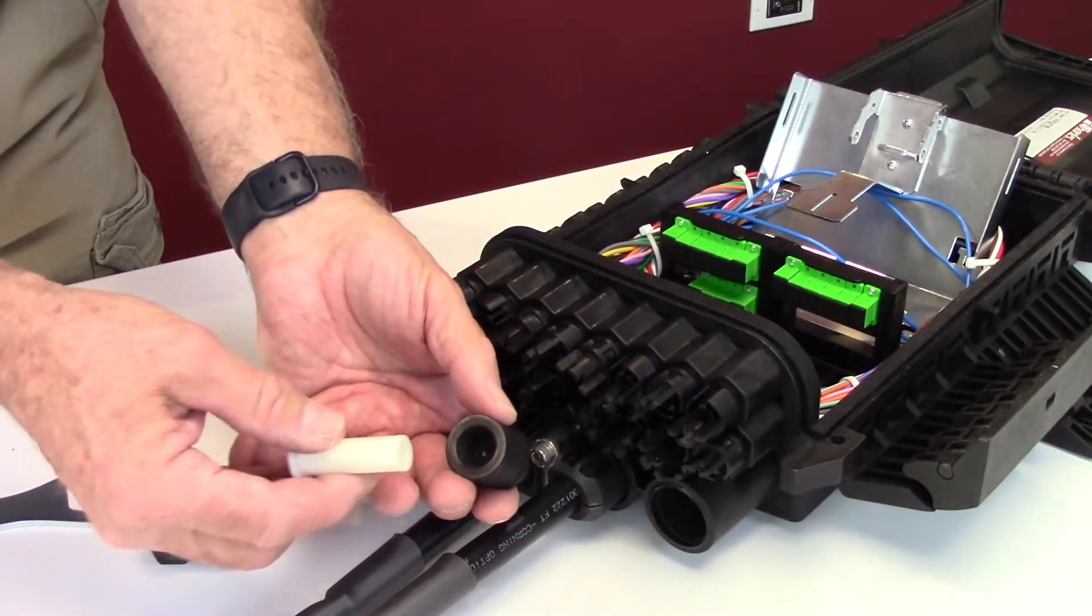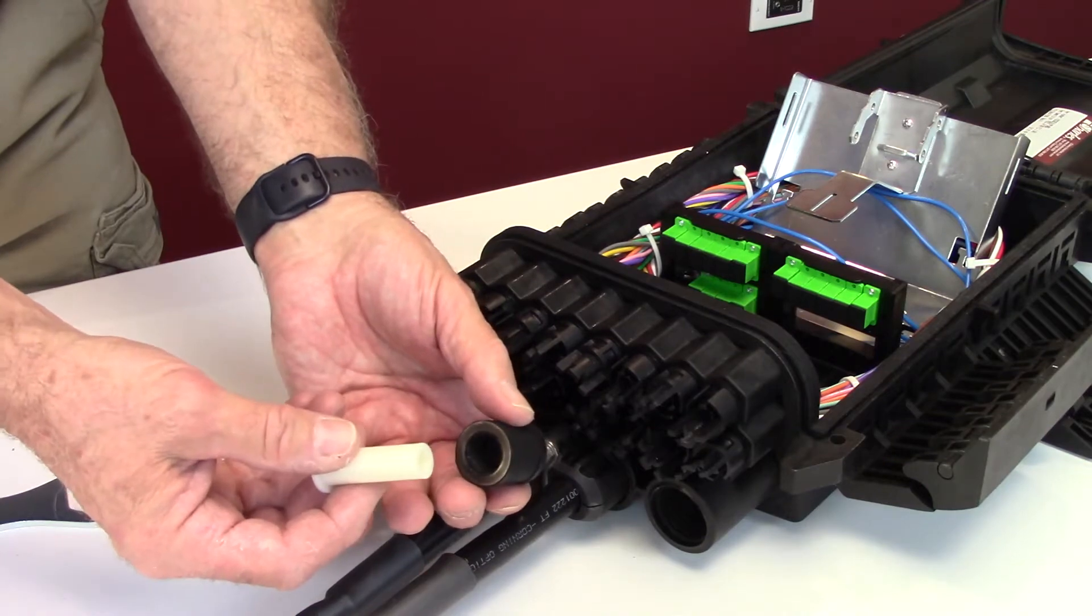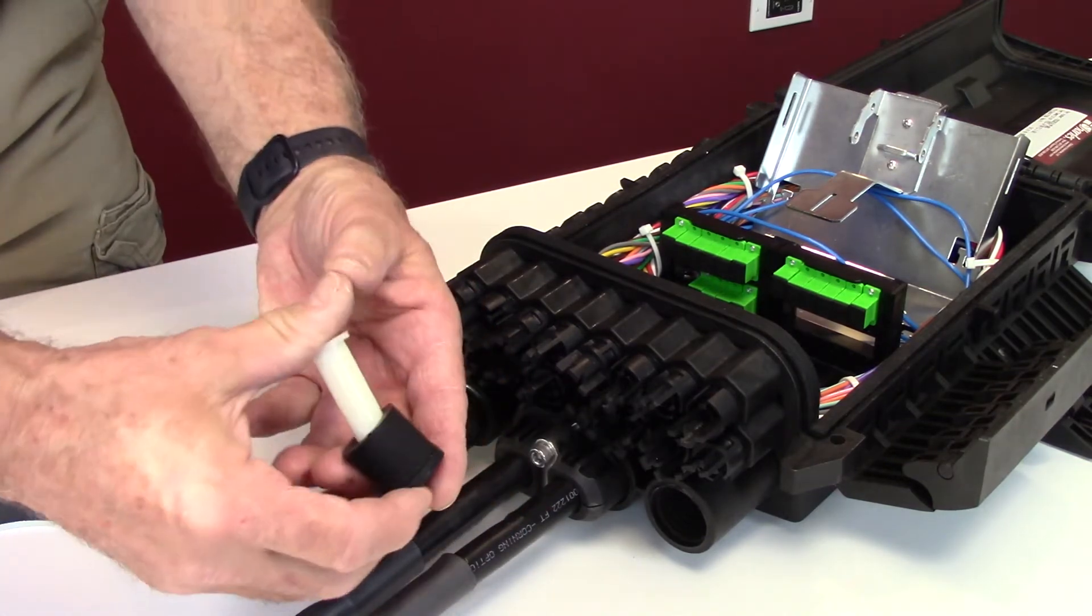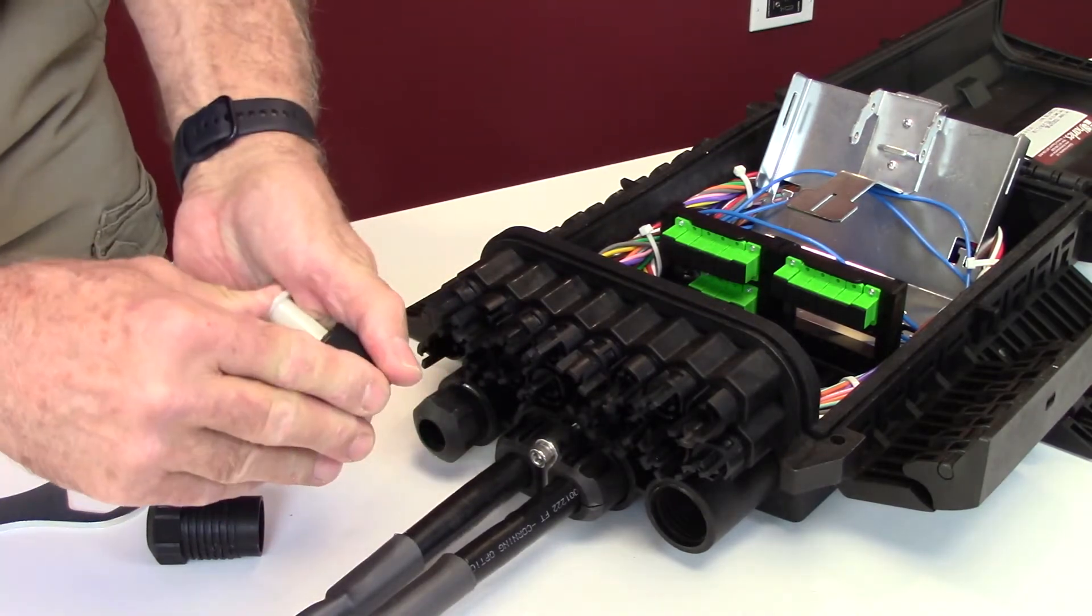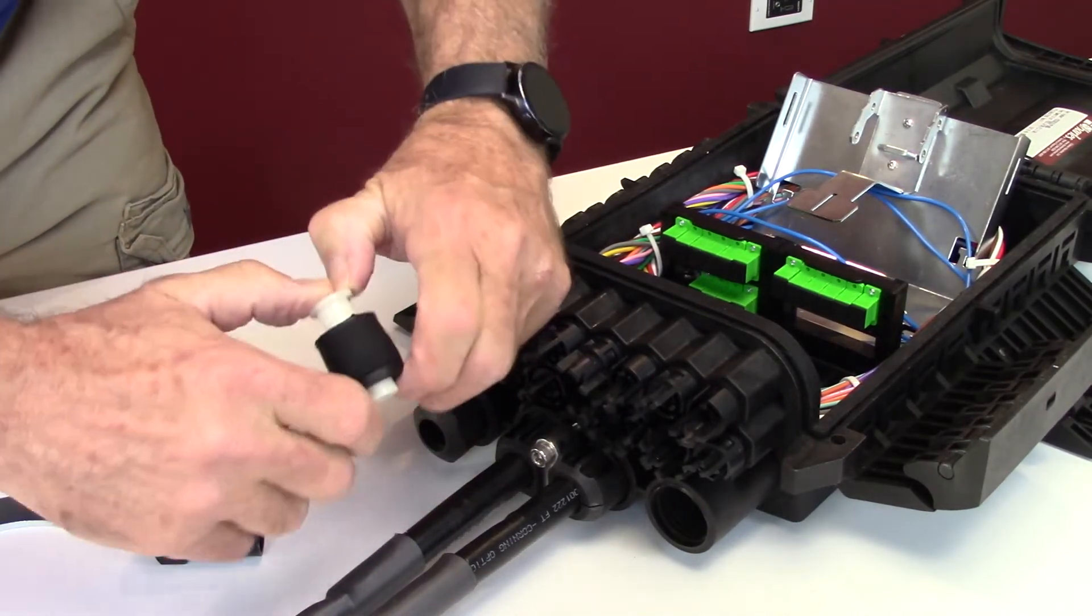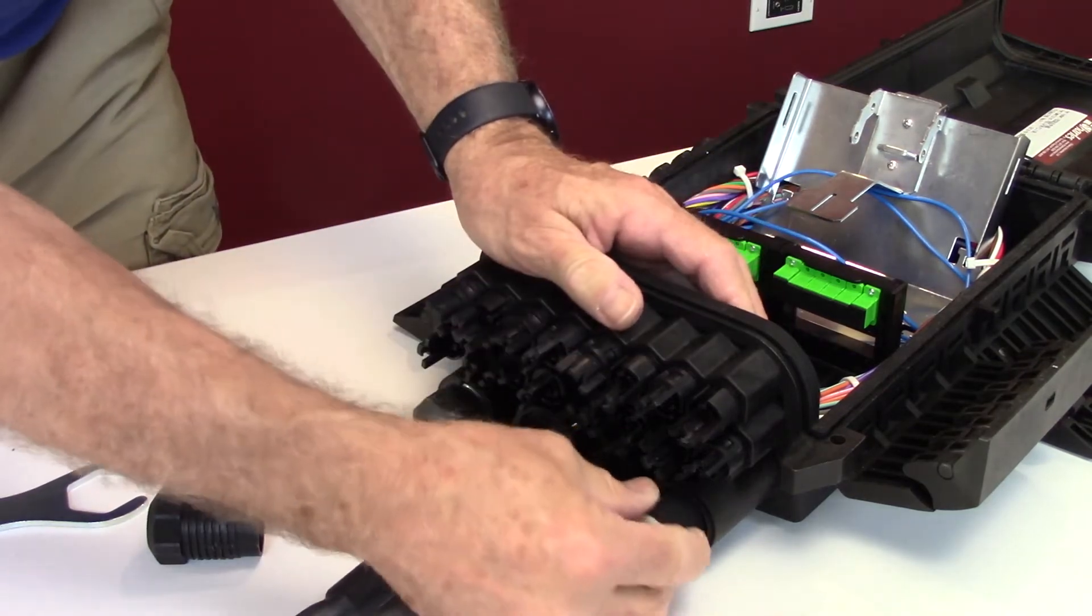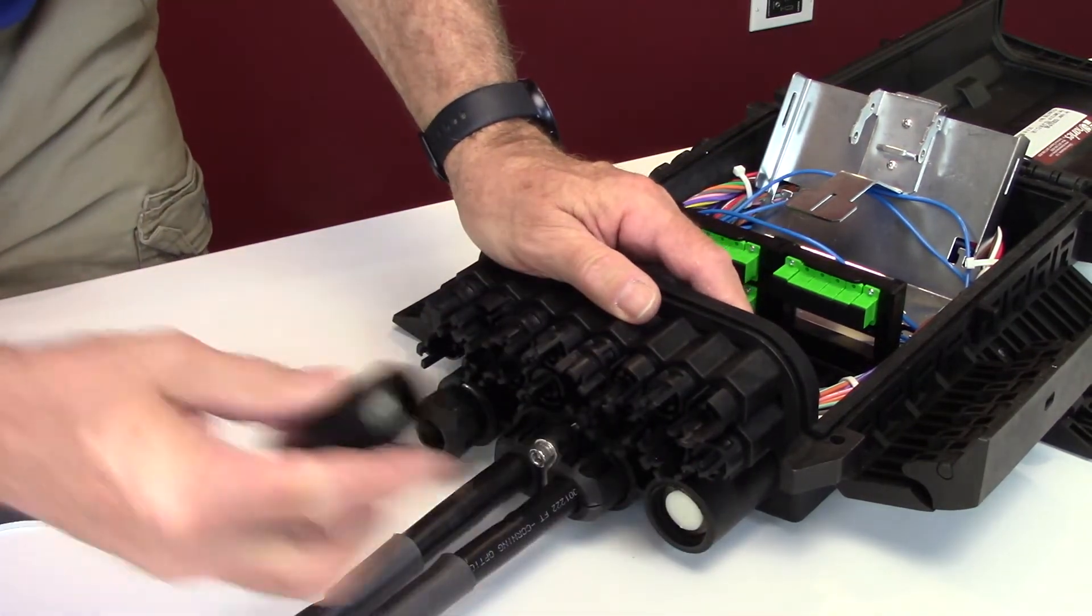All unused branch cable ports must be sealed with a plug and grommet. To seal the cable port, push the white plug through the grommet and then install the assembly into the port. Tighten the branch port plug with the supplied wrench.